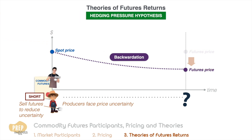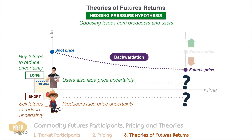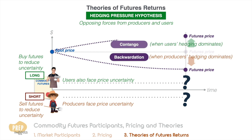The hedging pressure hypothesis added the hedging behavior of commodity users. While a producer faces uncertainty about the price at which he will sell his produce in the future, a user of the commodity will also face uncertainty about the price it will pay in the future. To hedge its price risk, the user will buy futures. So there are two opposing hedging forces: when producers' hedging behavior dominates, the market will be in backwardation, and when the users' hedging behavior dominates, the market will be in contango.